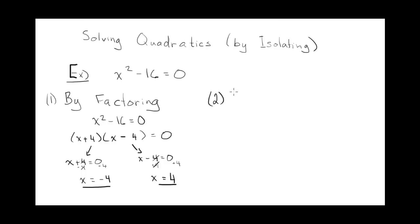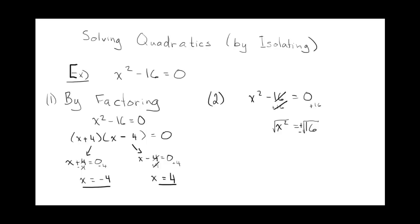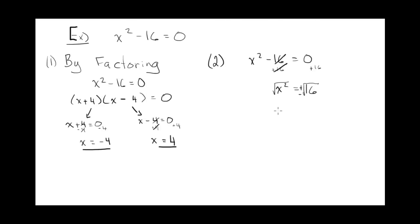The second method would be to isolate x, meaning get x by itself. So you're going to have to deal with the negative 16 — add 16 to both sides. These will cancel, and 0 plus 16 is 16. Then you'll have to take the square root of both sides, remembering that you must take the positive and negative square root. So x equals plus or minus the square root of 16, which is 4. So there are two answers: x equals positive 4 and x equals negative 4. We get the same answers.